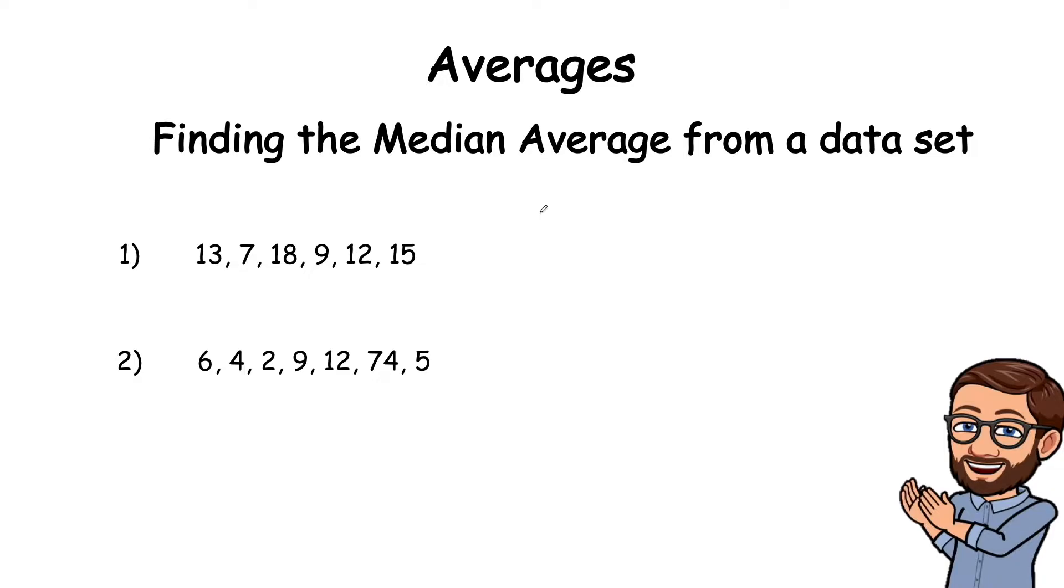So if we take a look at this set here, we place them in order: 7 is the lowest, and 9 and 12, then 13 and 15 and 18.